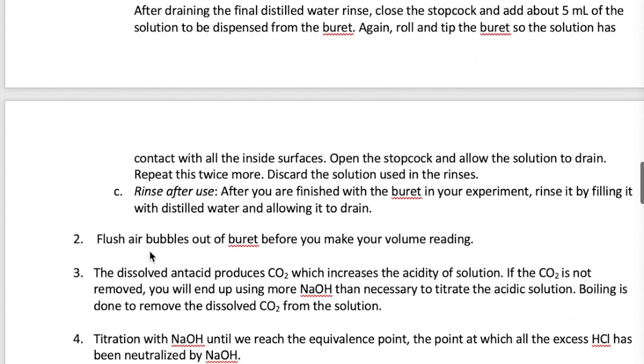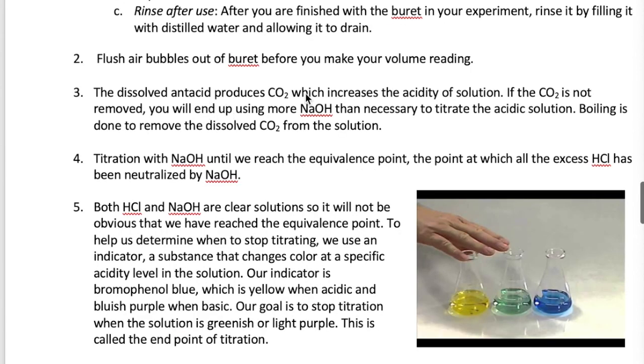Another quick reminder is that you need to flush the air bubbles out of the buret before you use it. Otherwise, your reading will be wrong. So as I mentioned earlier, when you add the HCl to your antacid, you're going to produce some CO2. This CO2 has to be removed from the solution by boiling. The reason the CO2 is a problem is because it will increase the acidity of the solution and will cause us to titrate with too much NaOH.